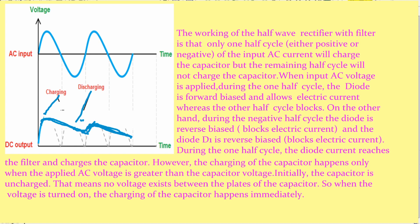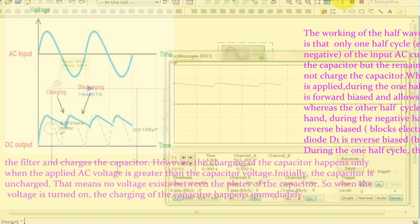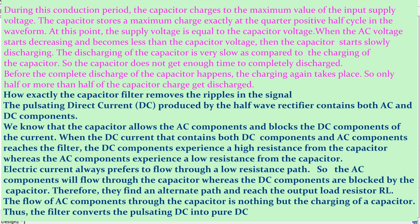During the positive half-cycle, the diode is forward biased, which means it allows electric current. During the negative half-cycle, the diode is reverse biased, which means it blocks electric current. During the positive half-cycle, the diode current reaches the filter and charges the capacitor. However, the charging of the capacitor happens only when the applied AC voltage is greater than the capacitor voltage. Initially, the capacitor is uncharged — no voltage exists between the plates. So when the voltage is turned on, charging of the capacitor begins immediately, and the capacitor charges to the maximum value of the input supply voltage.